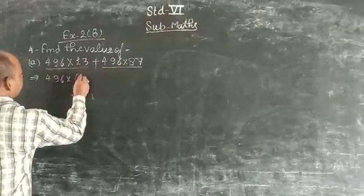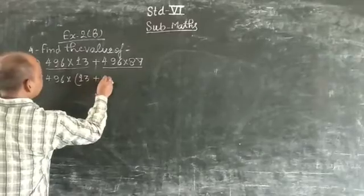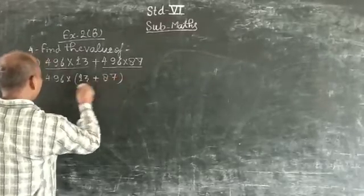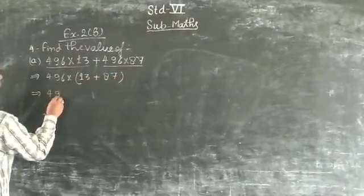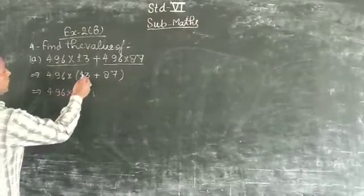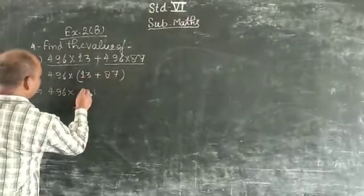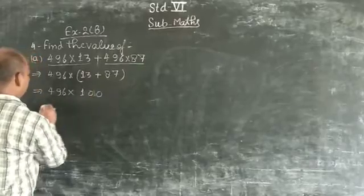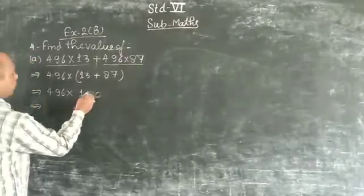The remaining numbers are 13 plus 87. Now here, 496 is the same. Multiply: 13 plus 87 is 100. Now we multiply 496 × 100.